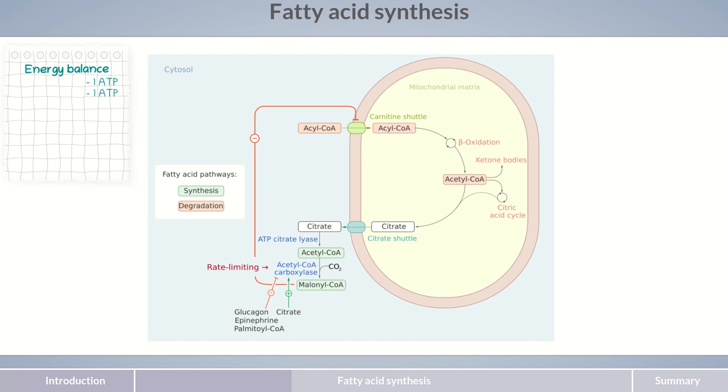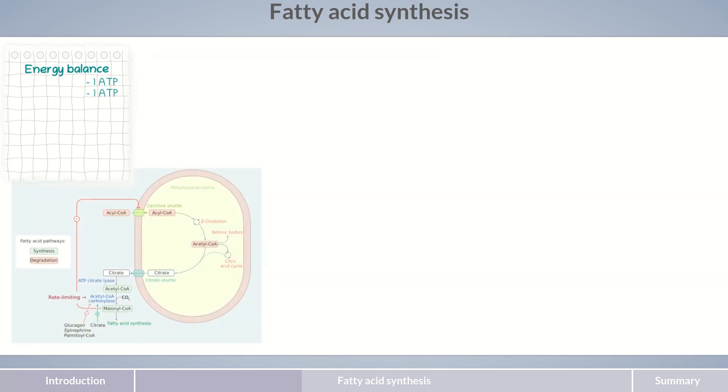The third characteristic of fatty acid synthesis is that all reaction steps are performed by only one enzyme complex, fatty acid synthase. The growing fatty acid chain remains anchored to the enzyme during the entire process. This ensures that fatty acid buildup doesn't stop before reaching the desired chain length. At the beginning of the process, each malonyl unit used to build the fatty acid is attached to an acyl carrier protein, abbreviated ACP. This, in turn, binds to fatty acid synthase.